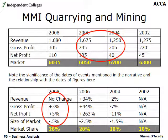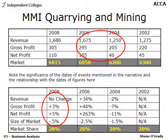A cash cow eventually becomes a dog, so when things are going well, you must use that cash to support your question marks and stars. This is a vital point that should have been included in your answer for this question.